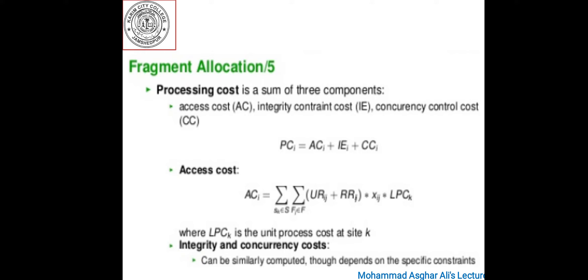The processing cost component PC consists of three cost factors: the access cost AC, the integrity enforcement cost IE, and the concurrency control cost CC. So PC equals AC plus IE plus CC. The detailed specification of each cost factor depends on the algorithm used. To demonstrate, we specify the access cost AC in some detail.